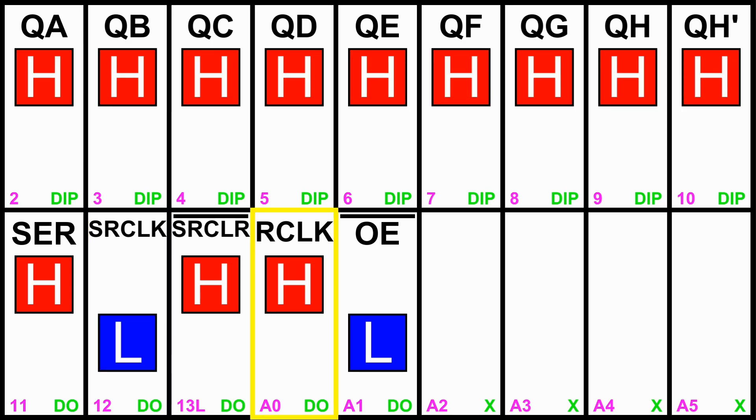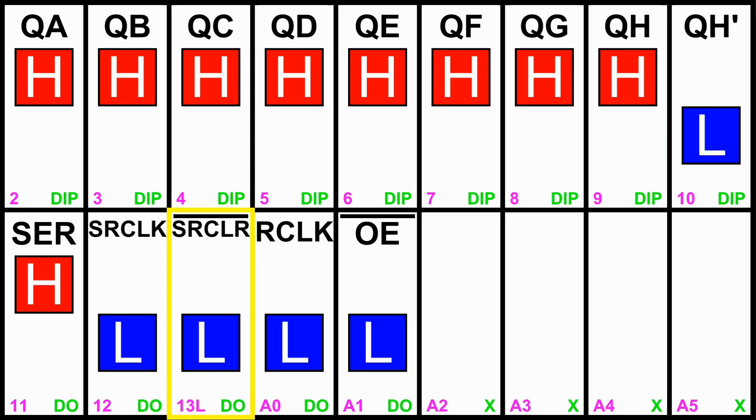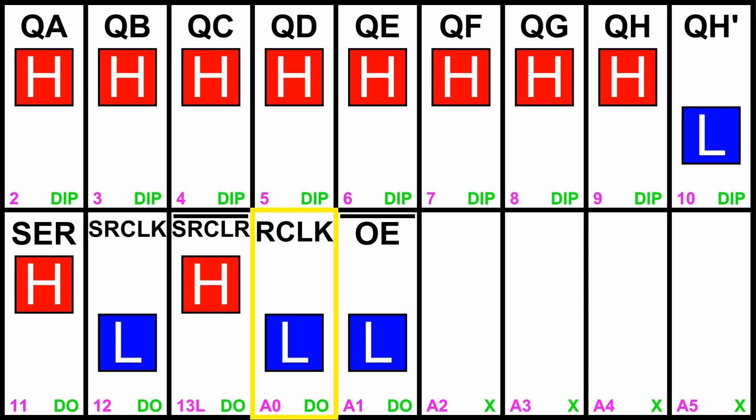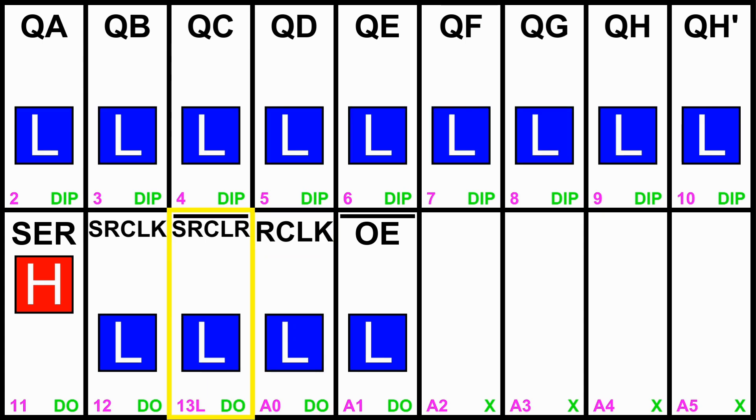Let me shift in eight highs until we see QH go high on the eighth one. So update, there's the eight highs. And if I set clear, it's asynchronous. It immediately clears internally. And then I can update. And then if serial clear is low, I can shift all I want and it is not going to actually put any highs in there.